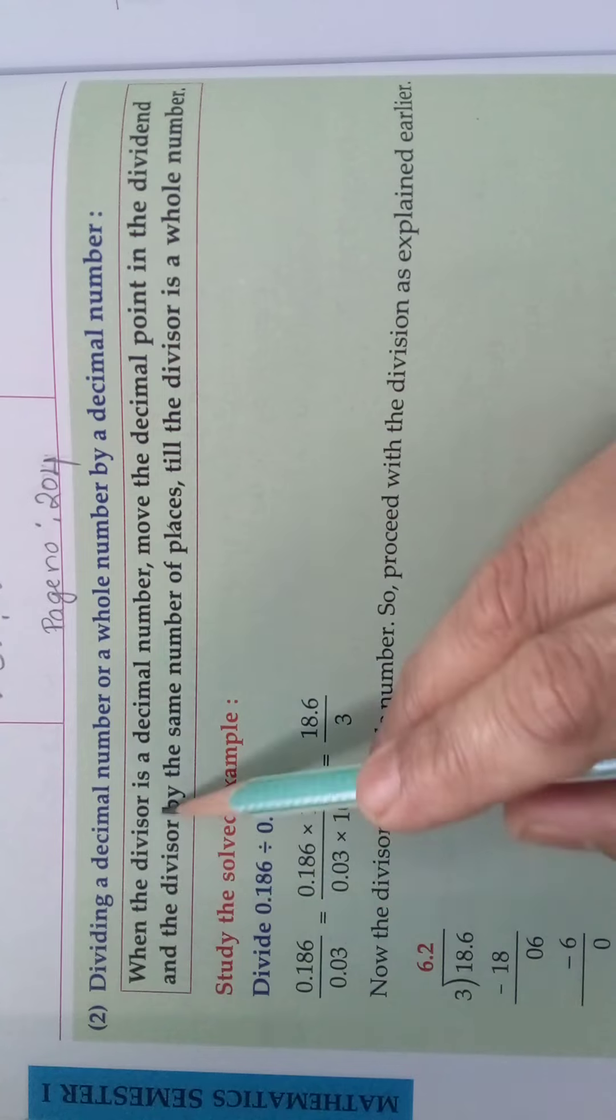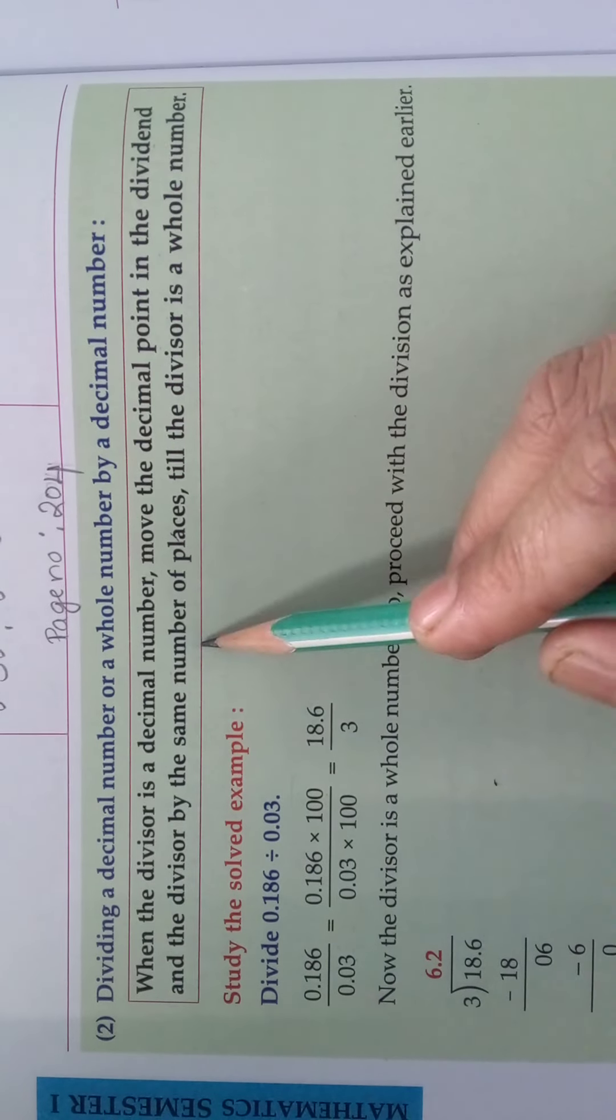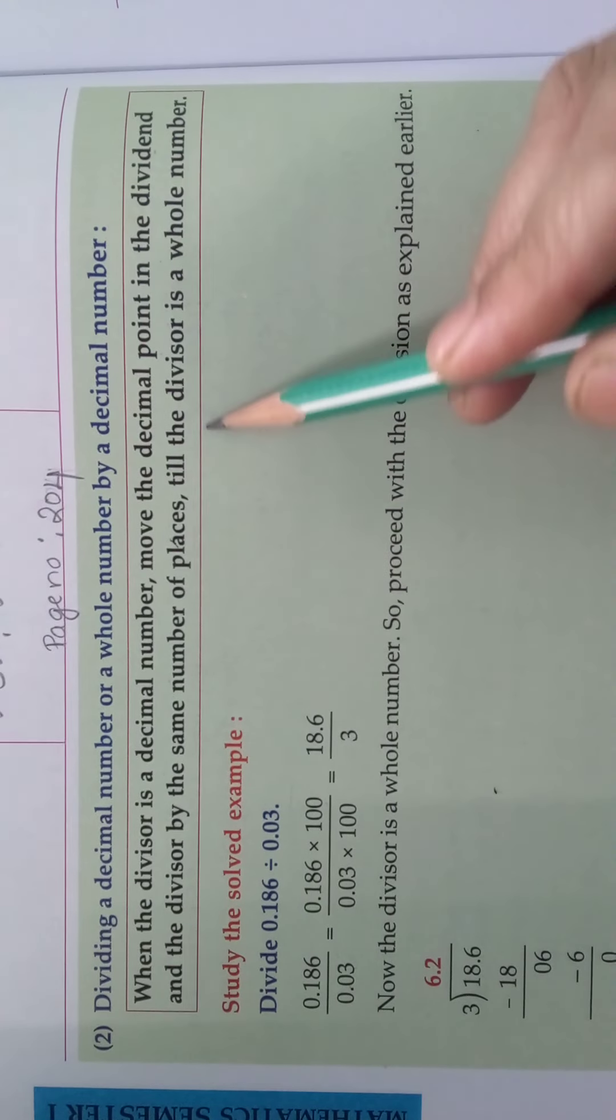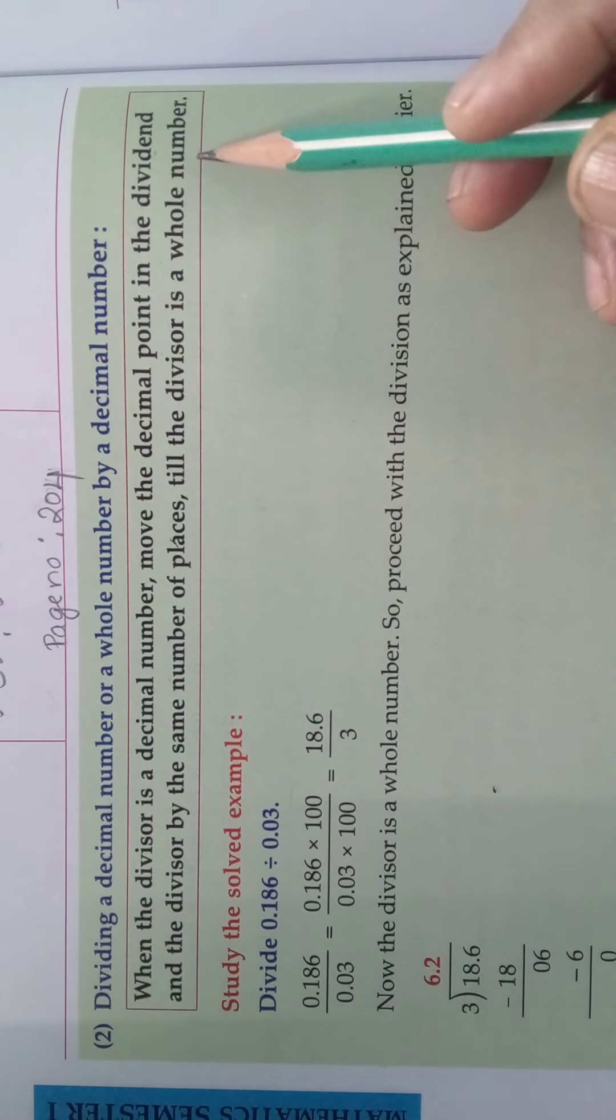So when the divisor is a decimal number, move the decimal point in the dividend and the divisor by the same number of places till the divisor is a whole number.